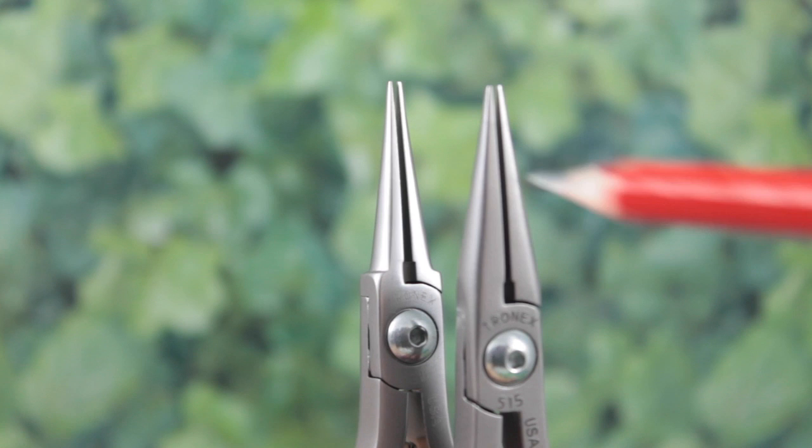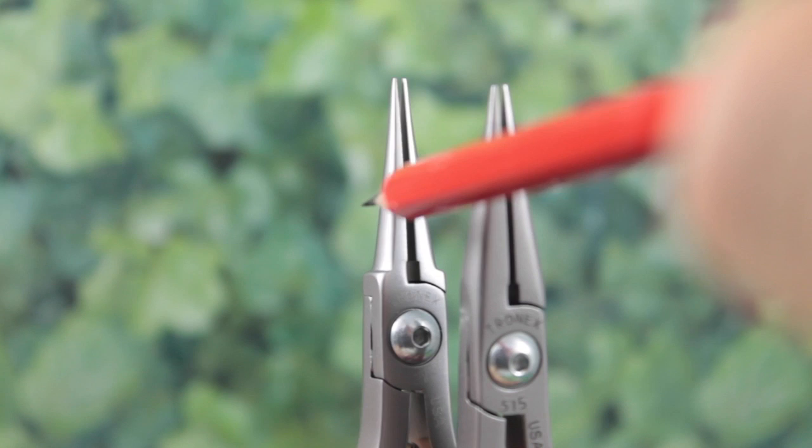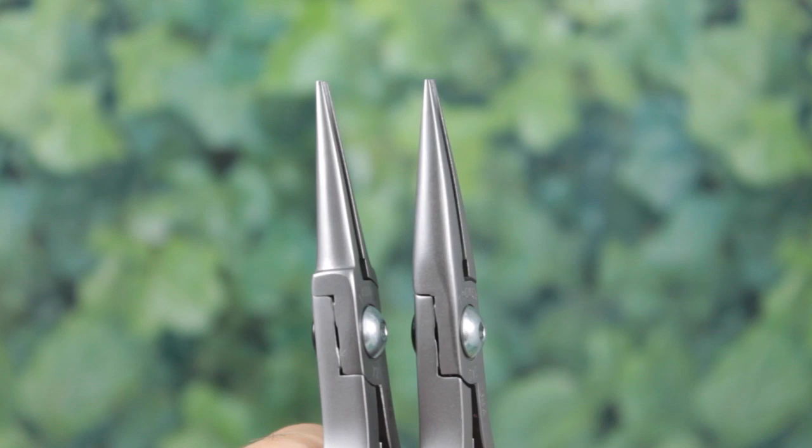The chain nose are a lot thicker and stronger, designed more for bending, whereas the needle nose at the back are a lot finer and tapered. Just turn them round there, and you can see the comparison.